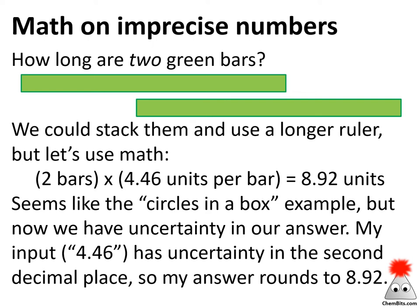Now, if I've got two of those green bars, I could just stack them up, or I could add them, or I could do some math. So I've got two bars — an infinitely precise counting number — and 4.46 units per bar. So if I multiply those together, I get 8.92. This one kind of cleans itself up pretty well. But remember, I've still got uncertainty in that last digit, just like there's uncertainty in that measurement. There's uncertainty in the math that is involved in that measurement, and that's where we're going to use sig figs to help us out a lot.